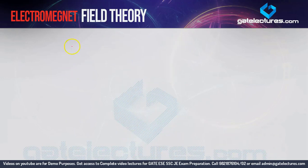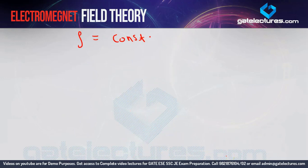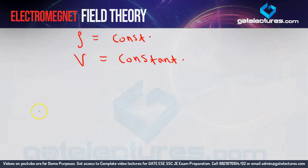If ρ is constant, note that ρl (line charge density) is a given fixed value, 2πε is constant, so if ρ is constant, the voltage V will also become constant. This is the voltage for a line charge.